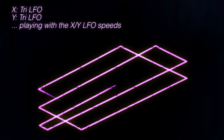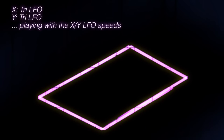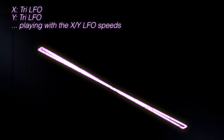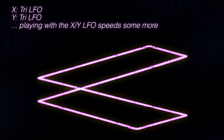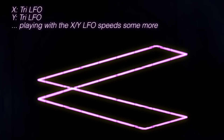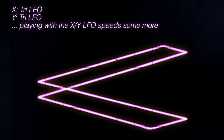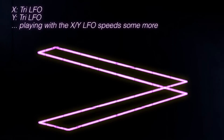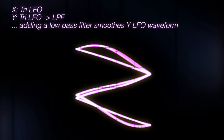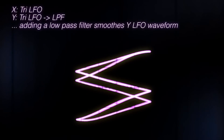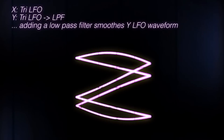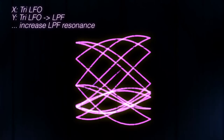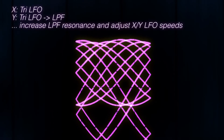When I adjust the individual LFO speeds slowly, I can get various different paths and thus shapes. Until now the paths are all straight lines. Let's smooth the movement along the Y axis by routing the Y axis LFO through a low-pass filter and turning down the cutoff frequency. Increasing the filter resonance and adjusting the LFO speeds again will give you this cool waveform.